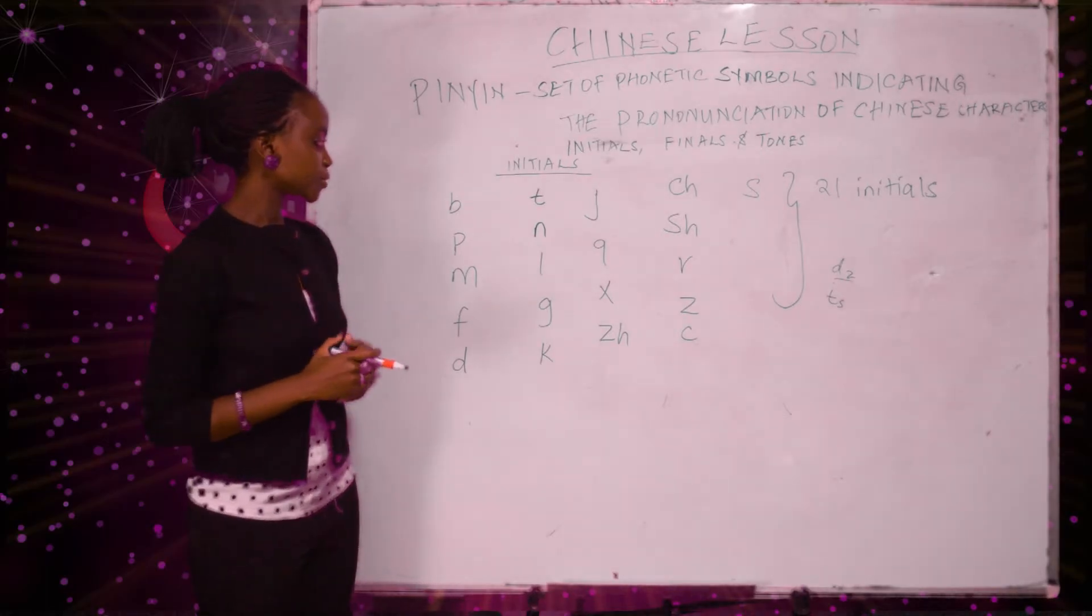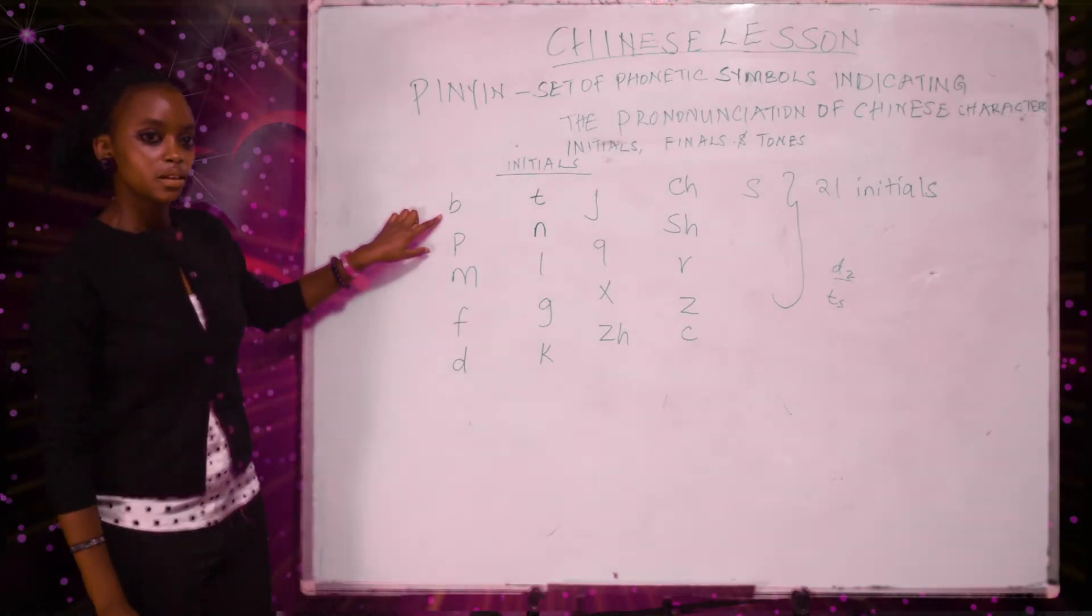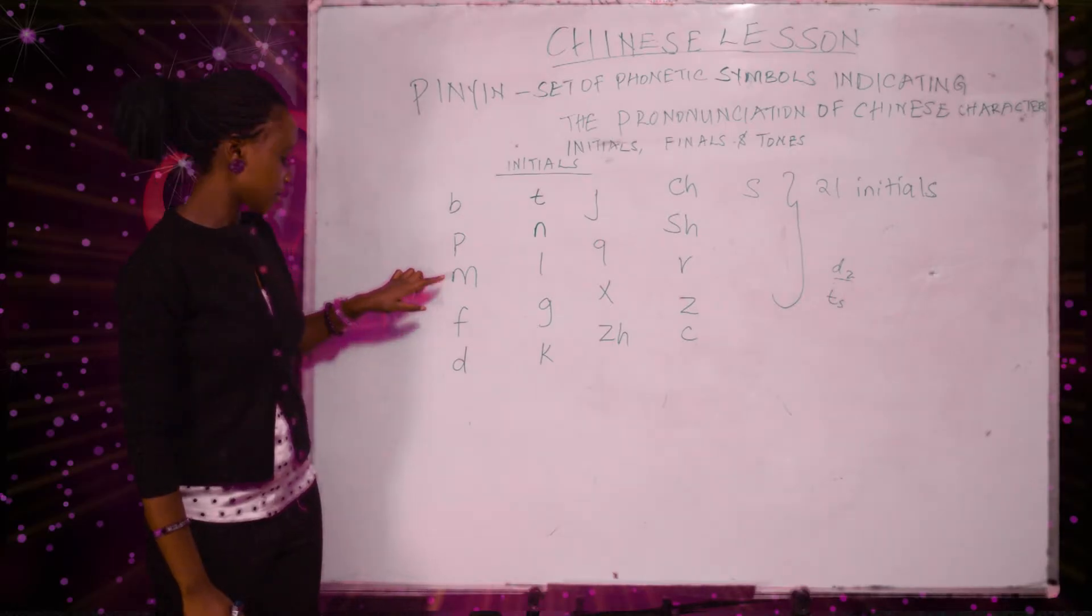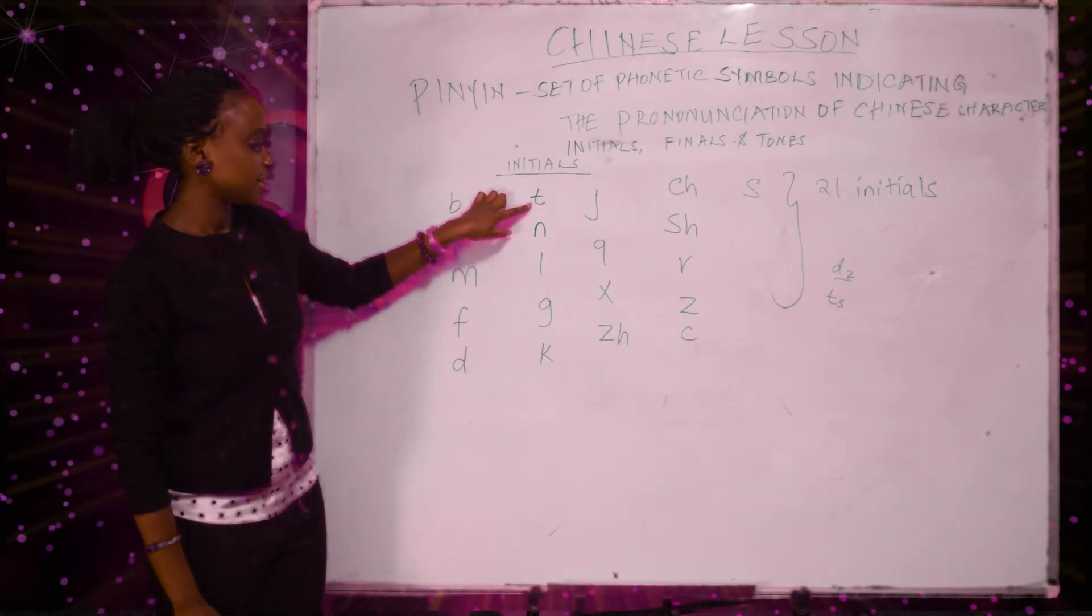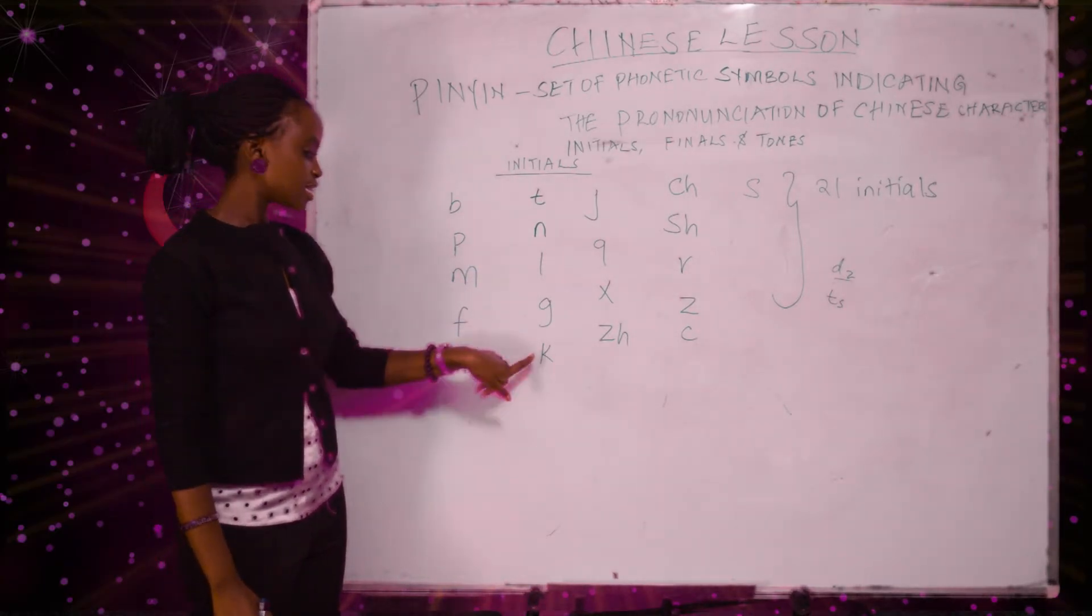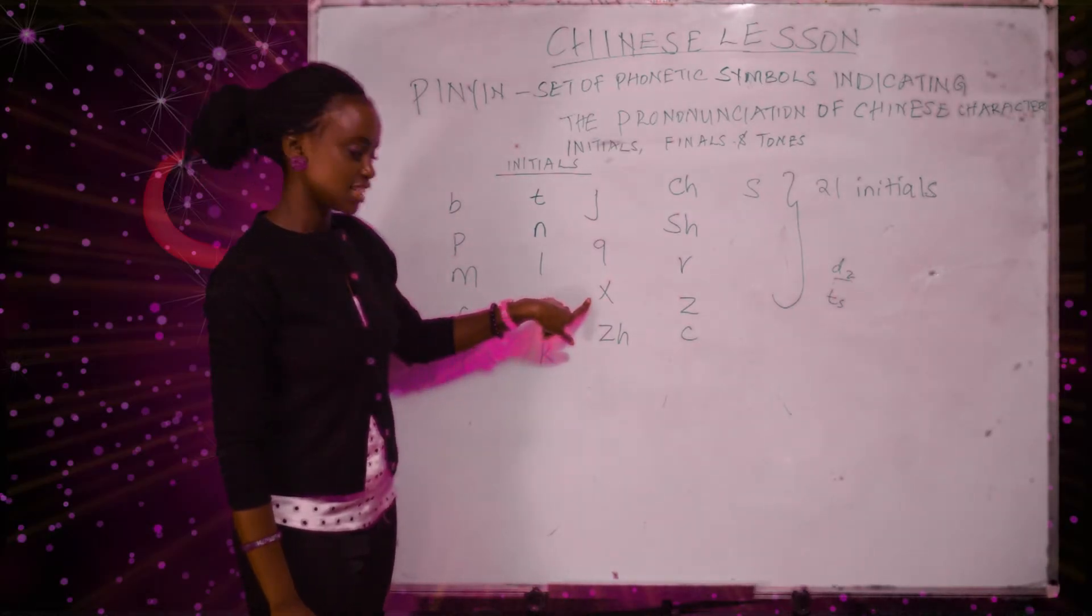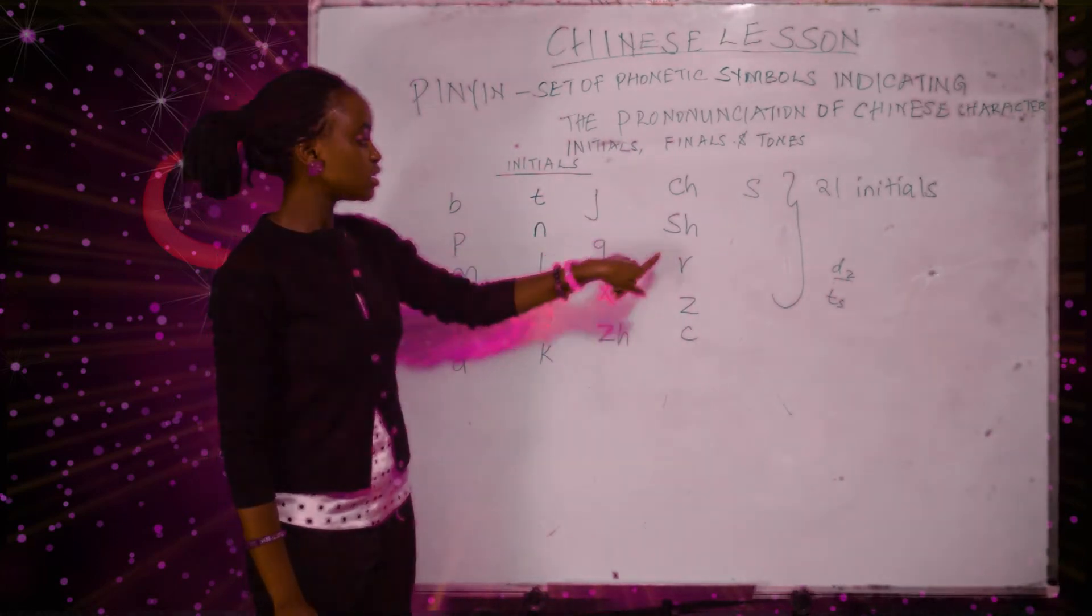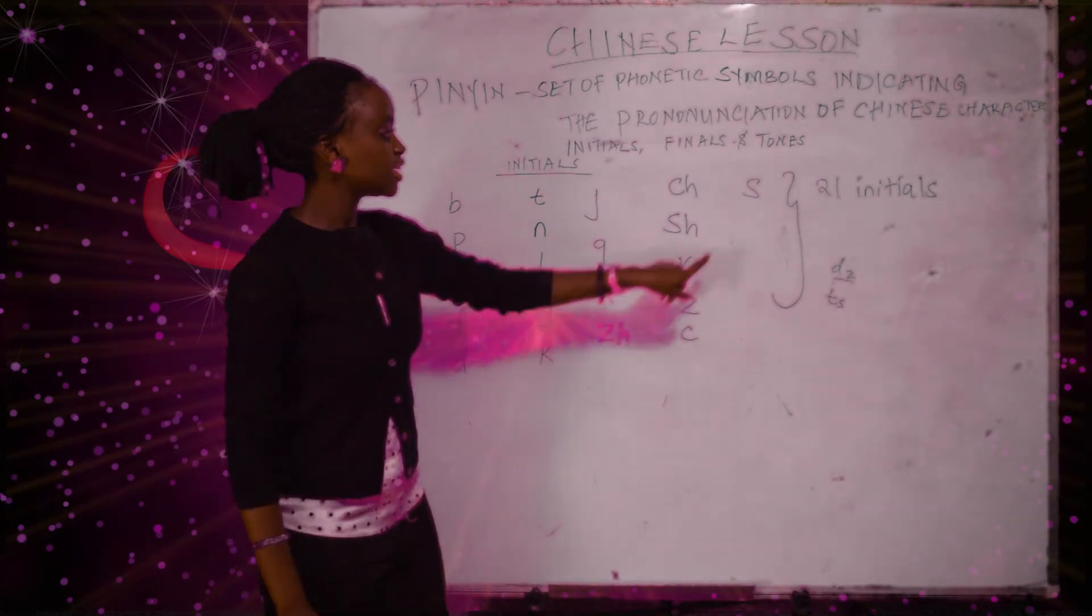Let us just try to recap on the 21 initials. The first one is the B. The second one is P. M. F. D. T. N. L. G. K. Ji, qi, xi, zh, ch, sh, r, z, c, s.